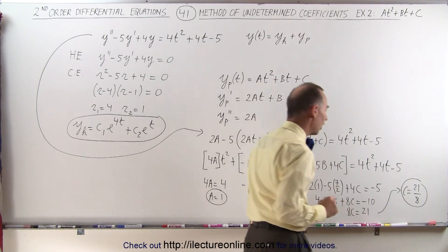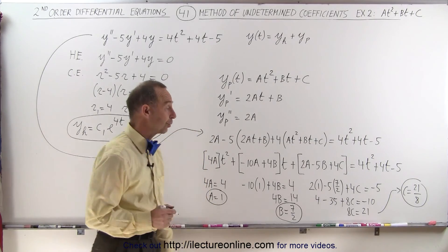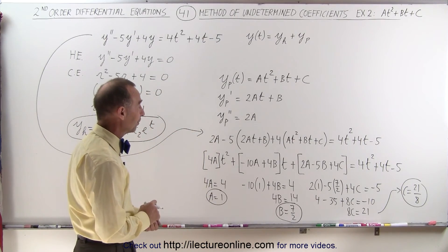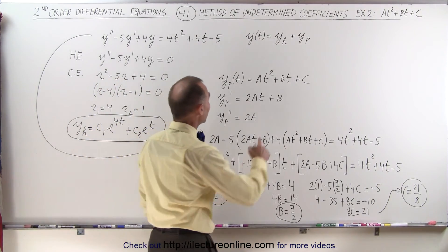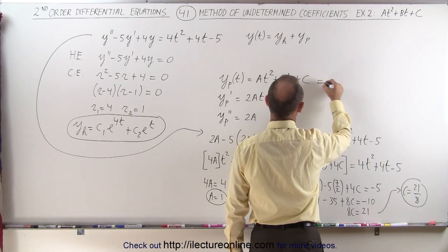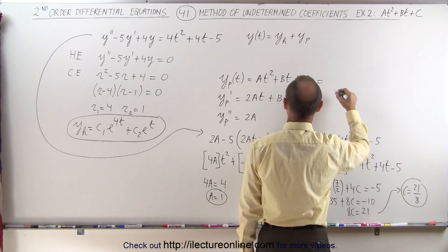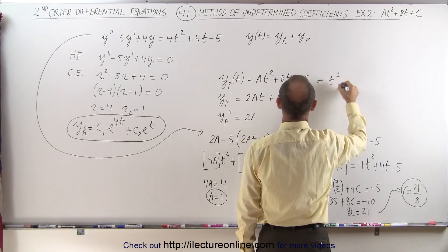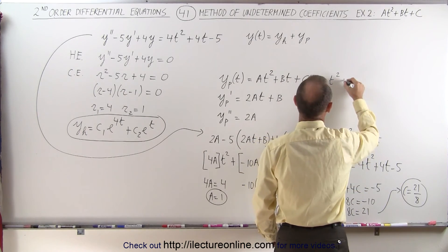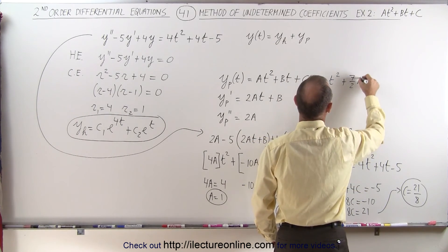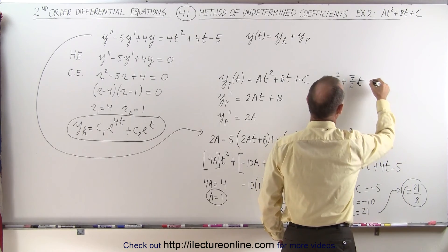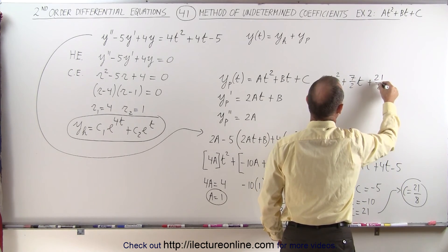And there's our third unknown or undetermined coefficient, which now we have determined, which means that the particular solution can now be written as follows: a is equal to 1, so we have t squared, b is 7 over 2, so plus 7 over 2 times t, and c is 21 over 8.